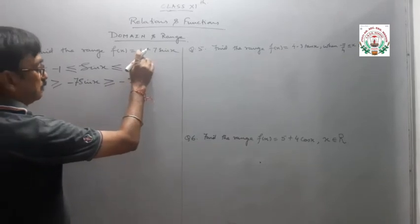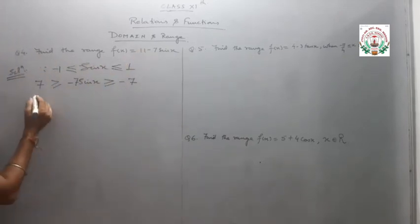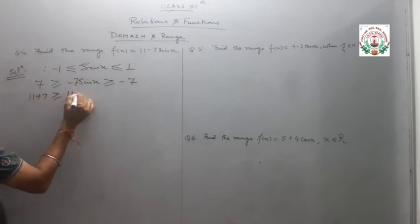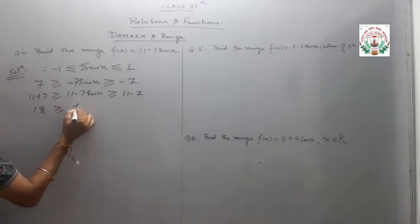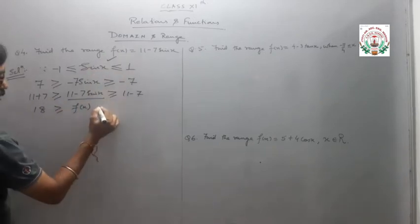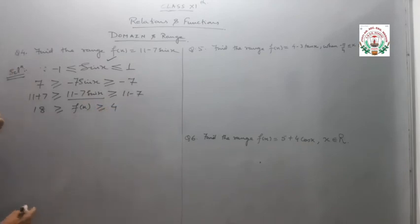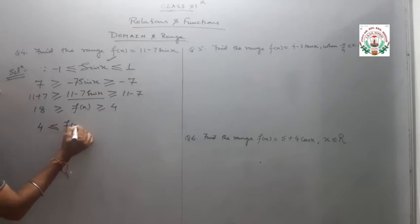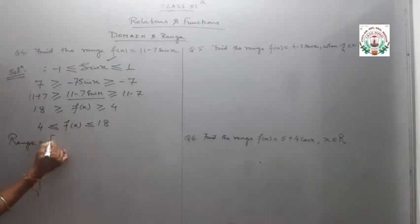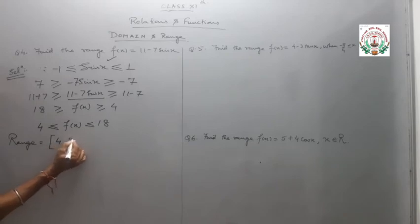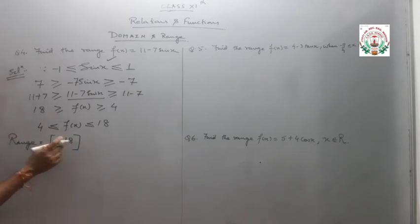Now we want the function f(x) equals 11 minus 7 sin x. Adding 11 to all terms: 11 minus 7 is less than or equal to 11 minus 7 sin x, less than or equal to 11 plus 7. That gives 4 less than or equal to f(x) less than or equal to 18. Reversing to standard form, the range of this function is the closed interval [4, 18].